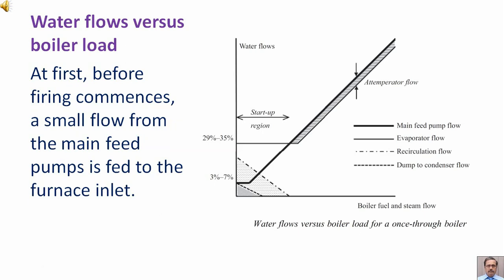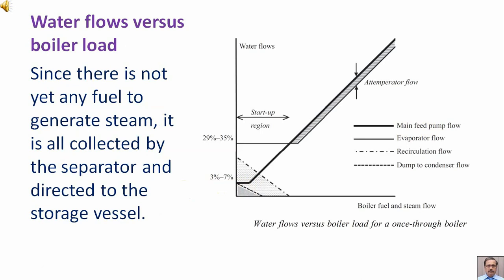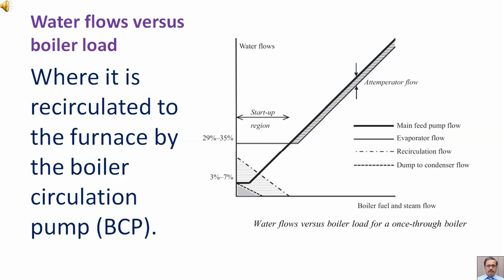Before firing commences, a small flow from the main feed pumps is fed to the furnace inlet. Since there is no fuel to generate steam, it is all collected by the separator and directed to the storage vessel, where it is recirculated to the furnace.